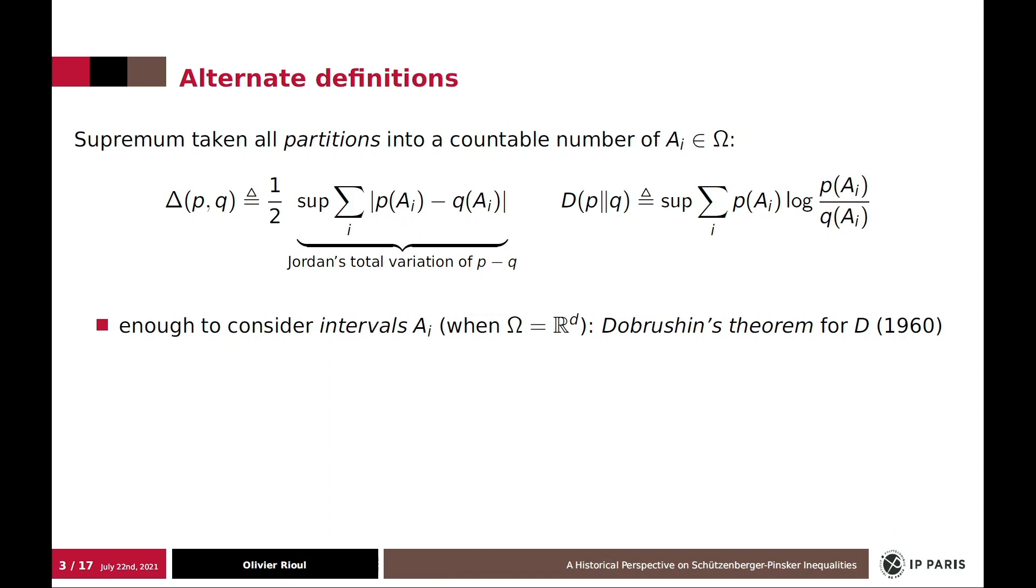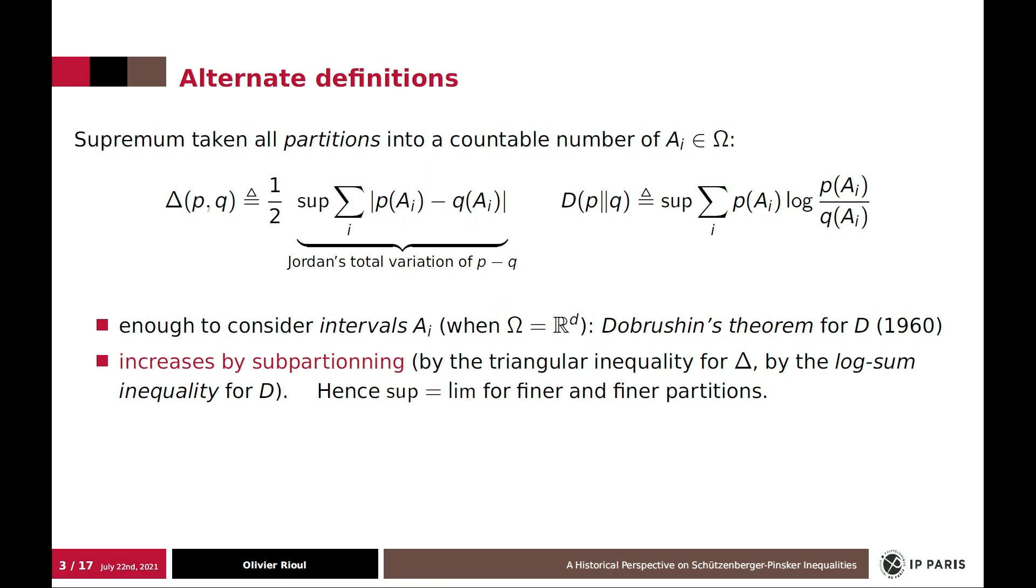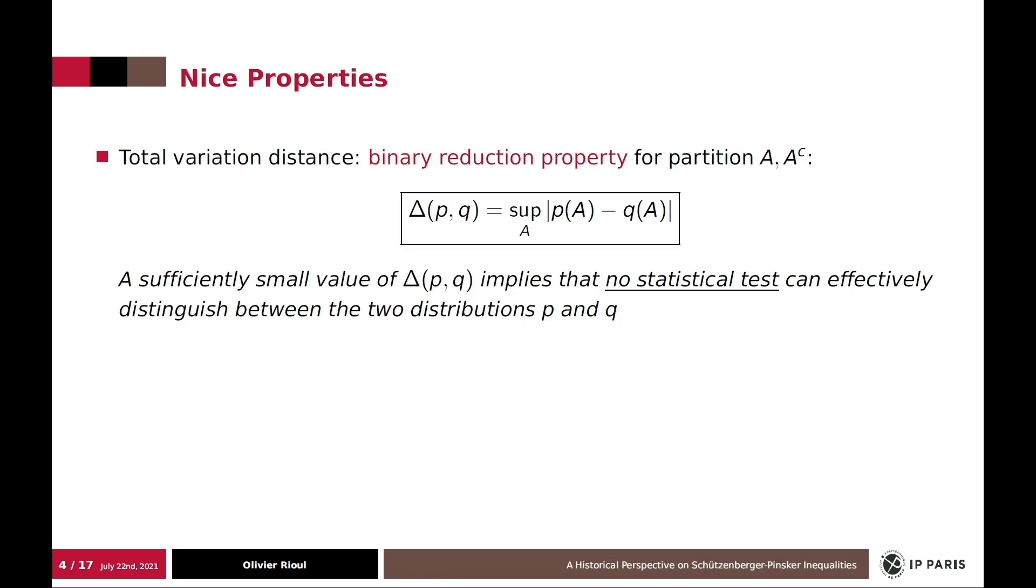There has been a lot of work, very old work, in the 1950s and 1960s about these quantities. Especially, we know that it's enough to consider intervals when the omega is typically R. This is Dobrushin-Sram for divergence. It's also very easy to check that it increases by sub-partitioning. And therefore, the supremum is actually a limit for finer and finer partitions. And we get the well-known formula. For delta, it's already known for binary partitions, which I call the binary reduction property, which will be useful in the sequel. And for D, it's the content of the Gelfand-Yaglom-Perez theorem back in 1959.